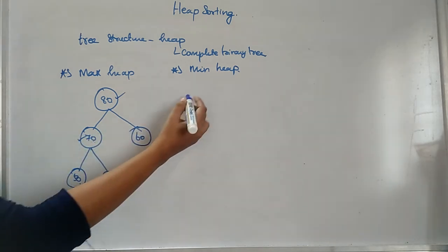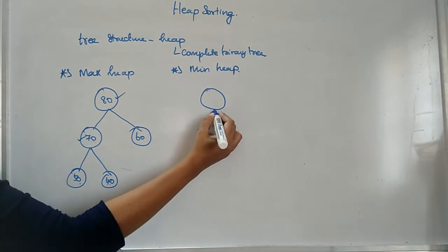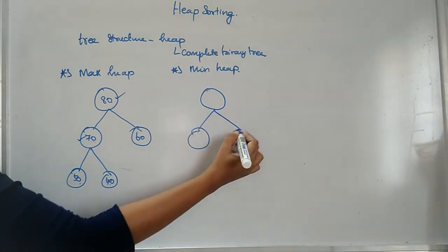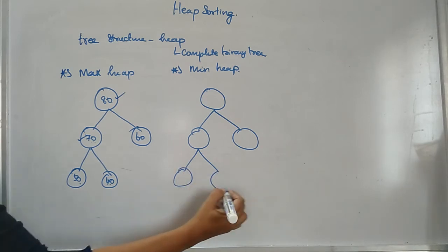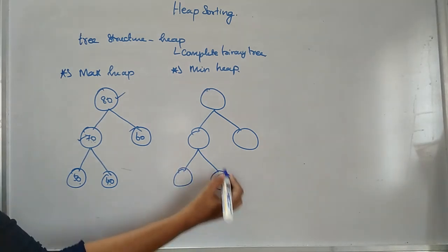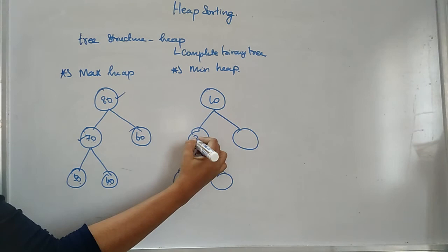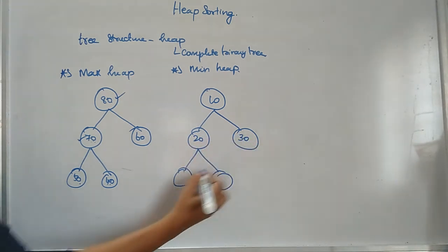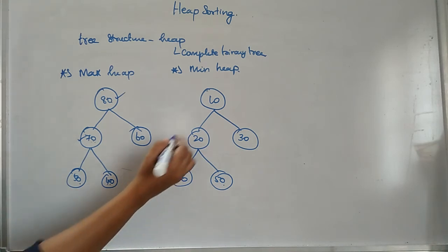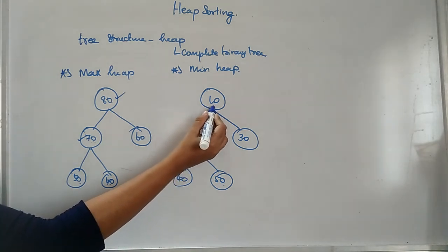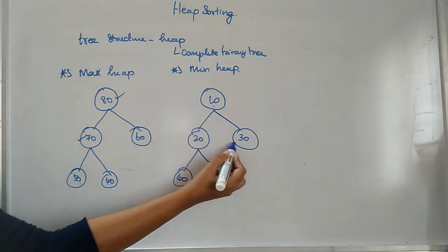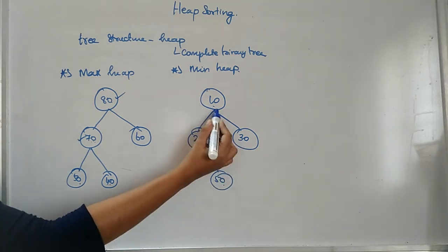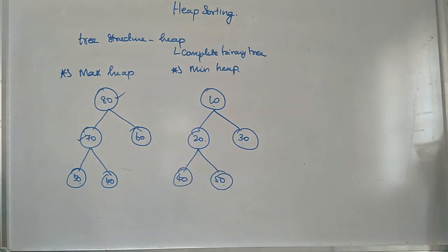If it is a min heap, you will have the structure like this one. You will have the values less than its children. So for example, 10, 20, 30, 40, and 50. So once you are considering here, the value which is present in the parent node is less than its children.